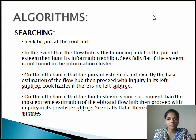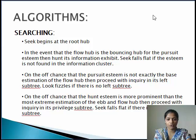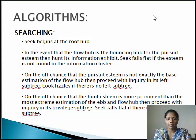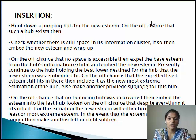In searching: first, the search begins at the root node. If the current node is the bounding node for the search value, then search its data array. Search fails if the value is not found in the data array. If the search value is less than the minimum value of the current node, then search in its left subtree. Search fails if there is no left subtree. If the search value is greater than the maximum value of the current node, then search in the right subtree. Search fails if there is no right subtree.